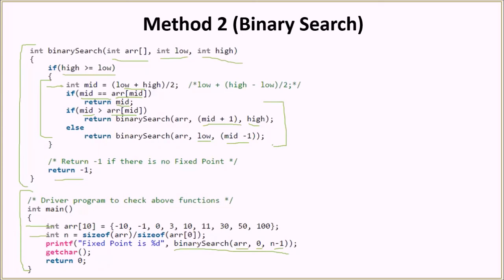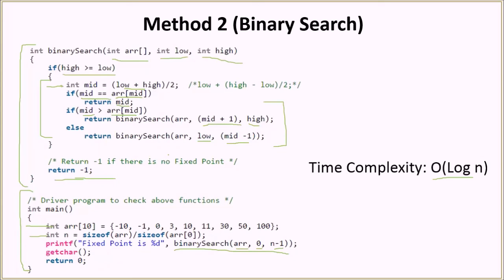The recursion continues until the fixed point is found or minus one is returned if it doesn't exist. The time complexity of this solution is O(log n), as with all divide-and-conquer algorithms, because in each iteration the array to be processed is halved.